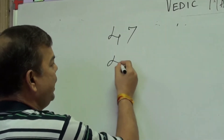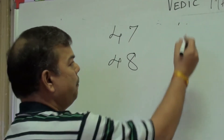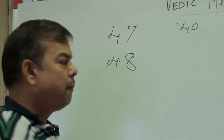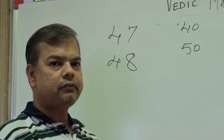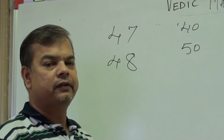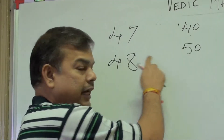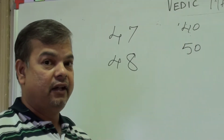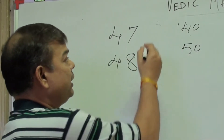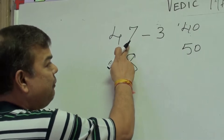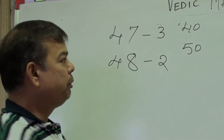Now let us multiply 47 × 48. I have two options: select base as 40 or base as 50. If I select base 40, my multiplier is 4, and 47 becomes +7 and 48 becomes +8, requiring multiplication of bigger numbers. If I select base 50, since 47 and 48 are close to 50, 47 becomes −3 and 48 becomes −2.